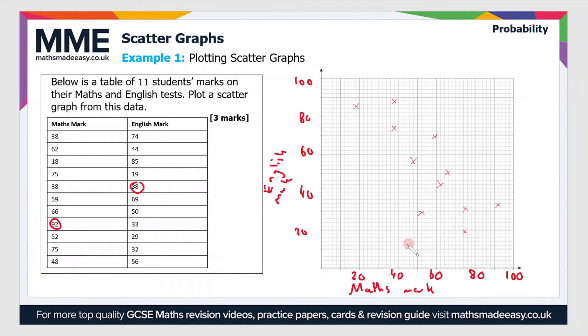I could also have chosen to put the English mark on the x-axis and the maths mark on the y-axis. It doesn't really matter which one is which in this case. Usually we try to put the dependent variable on the y-axis (the one we're measuring) and the independent variable on the x-axis, but in this case it doesn't really matter.